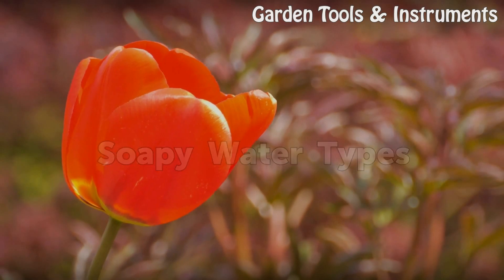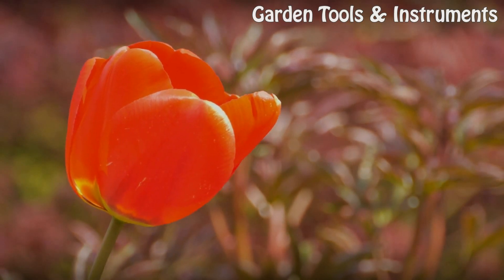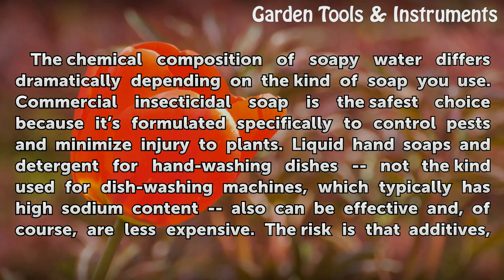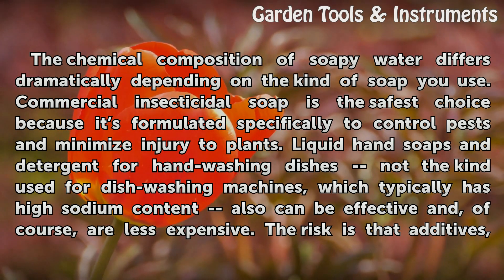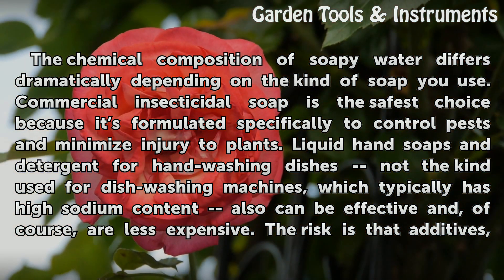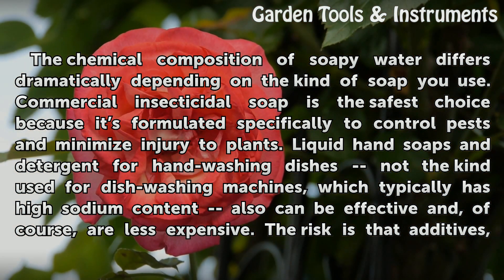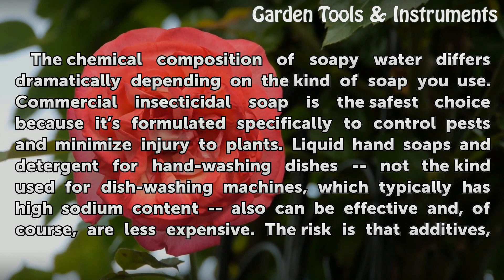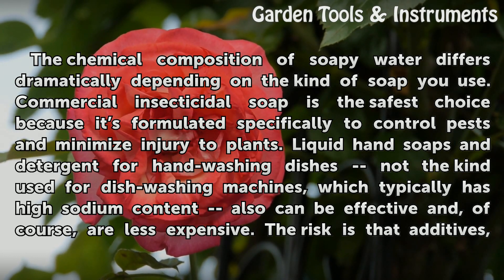The chemical composition of soapy water differs dramatically depending on the kind of soap you use. Commercial insecticidal soap is the safest choice because it is formulated specifically to control pests and minimize injury to plants. Liquid hand soaps and detergent for hand washing dishes — not the kind used for dishwashing machines, which typically has high sodium content — also can be effective and are less expensive.